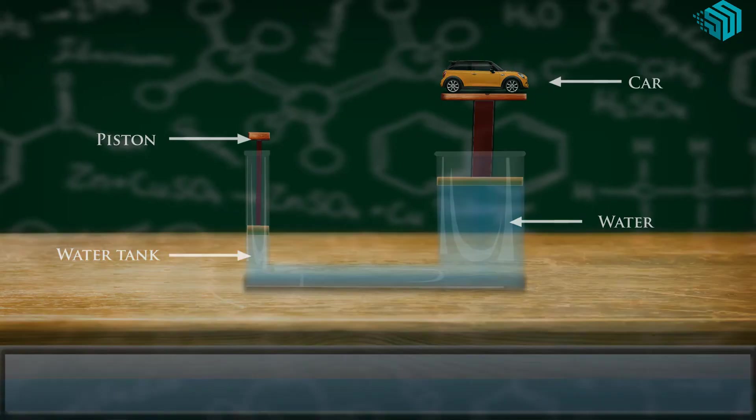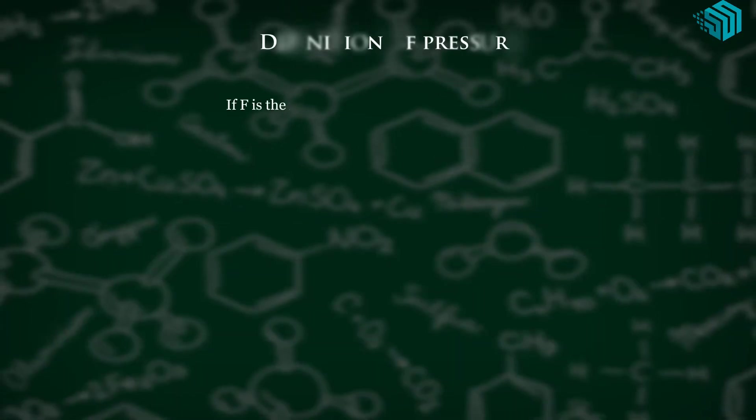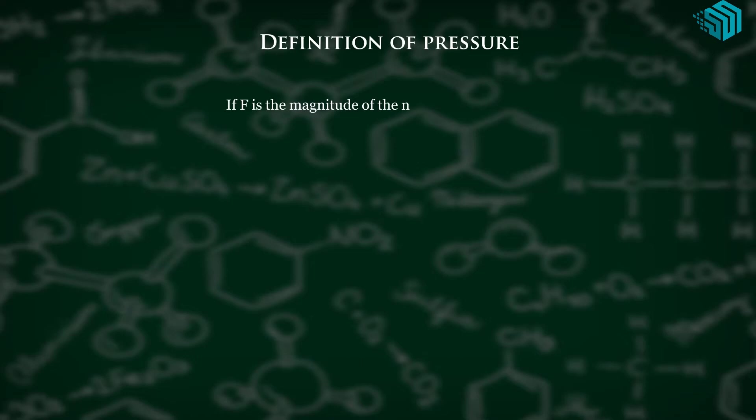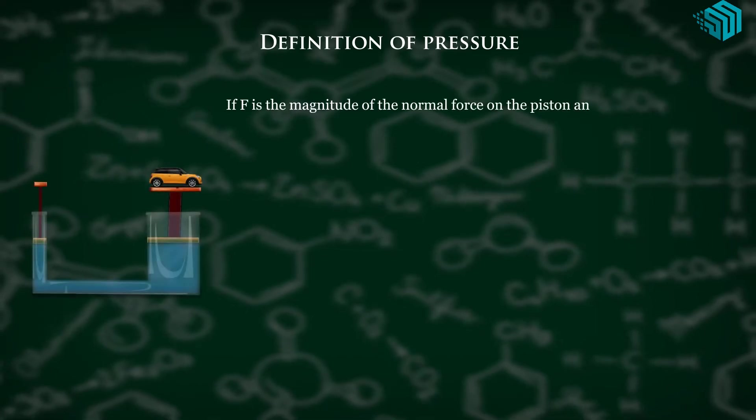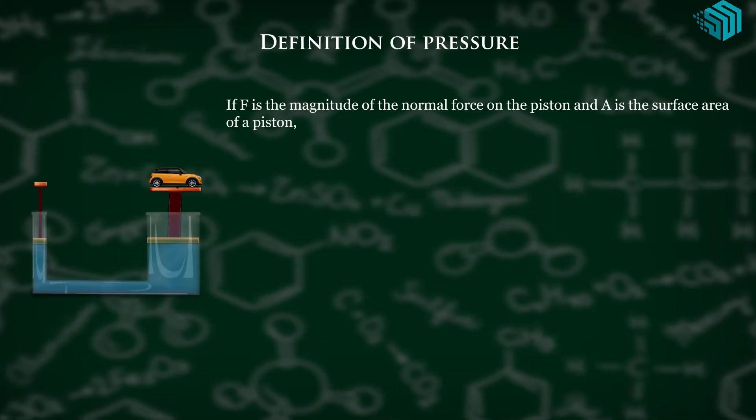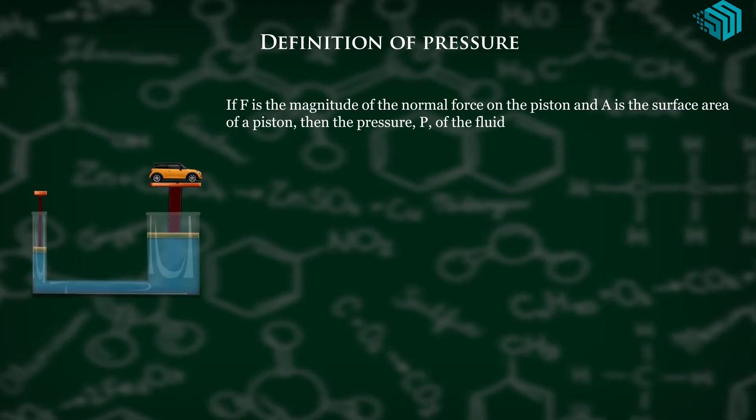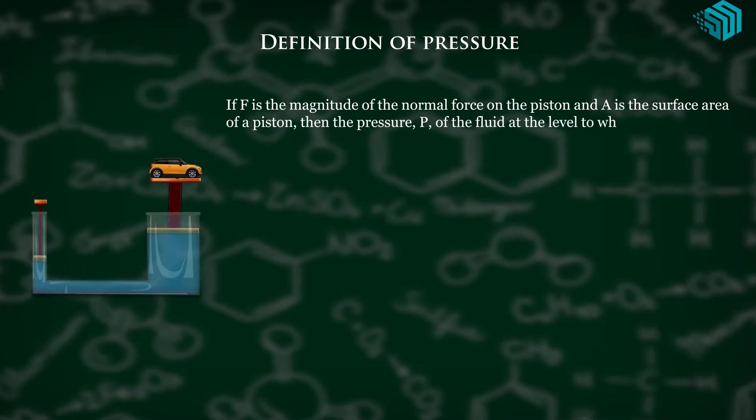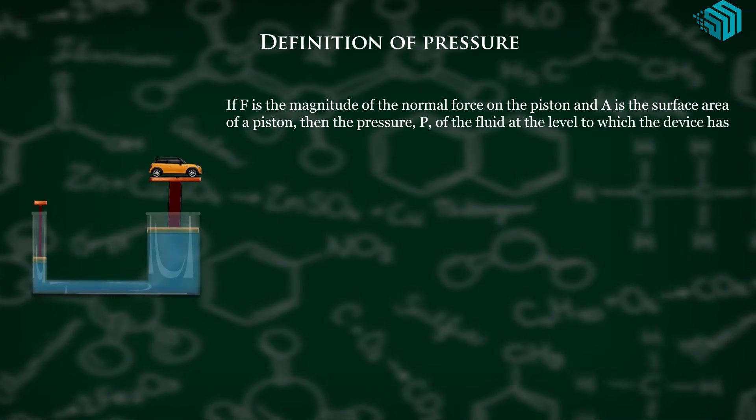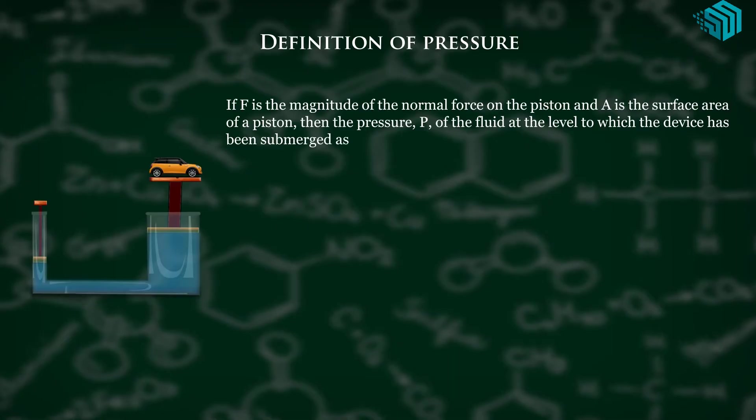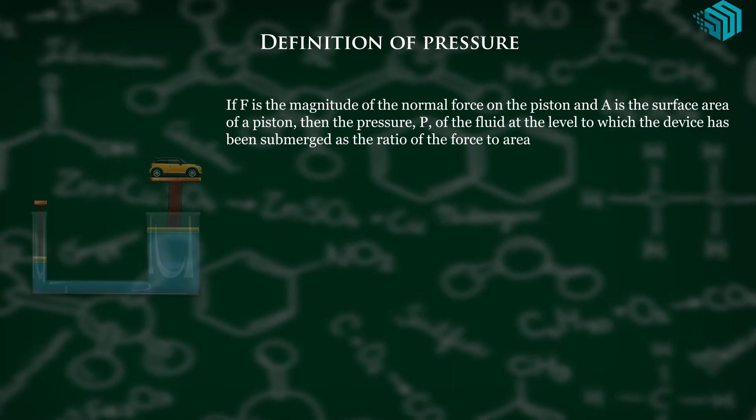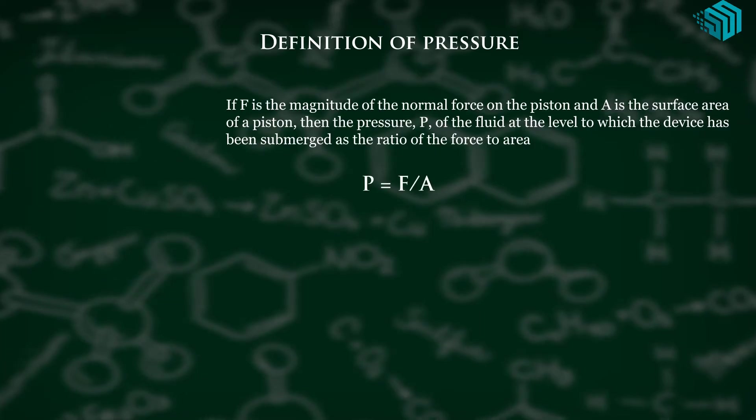Definition of pressure: If F is the magnitude of the normal force on the piston and A is the surface area of the piston, then the pressure P of the fluid at the level to which the device has been submerged is the ratio of the force to area. P is equal to F upon A.